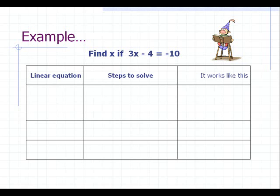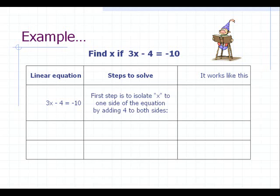For example, we need to find out the value of x in the equation 3x minus 4 equal to negative 10. We would isolate the term with x on one side of the equation by adding 4 to both the sides. This results in 3x equal to negative 6.